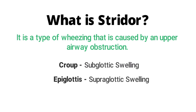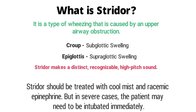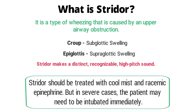Since this obstruction is occurring in the upper airway, when you listen to a patient with stridor you're probably going to hear a very recognizable, distinct high-pitched sound. Stridor can be treated with cool mist and racemic epinephrine, and in severe cases the patient may need to be intubated immediately.